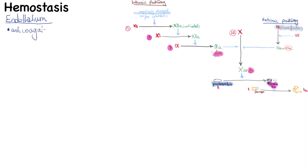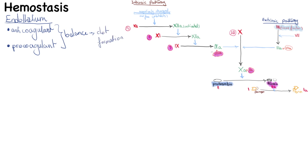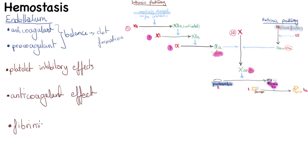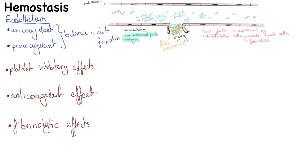The endothelium can have both anticoagulant and procoagulant activities — the balance between them determines the direction of clot formation, propagation, or dissolution. Endothelium function in hemostasis can be divided into three categories: platelet inhibitory effects, anticoagulant effects, and fibrinolytic effects.